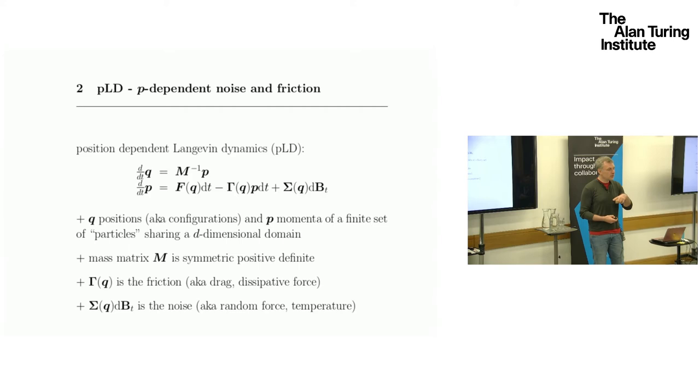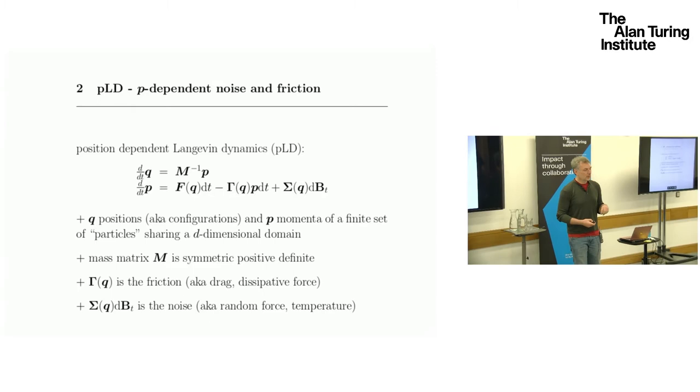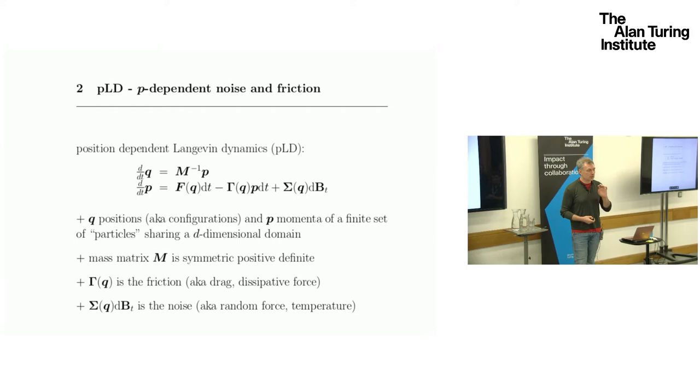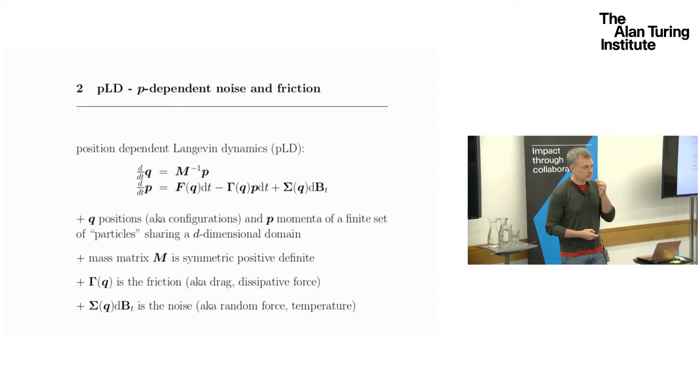The goal here is to show that there's a unique invariant probability distribution that the entire system converges quickly to. That's the goal. And to get there, you don't need to assume reversibility or this kind of commonly assumed things.